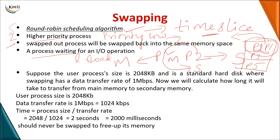When selecting a process for swapping out, you must take care that if any process is waiting for an I/O operation, you should not select that process for swapping. This is because the I/O operation may be satisfied shortly. This is an important consideration when deciding which process to swap out.